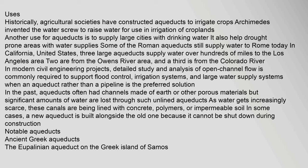Historically, agricultural societies have constructed aqueducts to irrigate crops. Archimedes invented the water screw to raise water for use in irrigation of croplands. Another use for aqueducts is to supply large cities with drinking water, and they also help drought-prone areas. Some Roman aqueducts still supply water to Rome today. In California, three large aqueducts supply water over hundreds of miles to the Los Angeles area — two from the Owens River area and a third from the Colorado River. In modern civil engineering, detailed study of open channel flow is required to support flood control, irrigation systems, and large water supply systems. Historically, aqueduct channels were made of earth or other porous materials, but as water becomes increasingly scarce, these canals are being lined with concrete, polymers, or impermeable soil. In some cases, a new aqueduct is built alongside the old one because it cannot be shut down during construction.